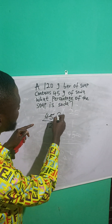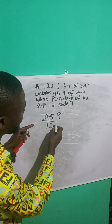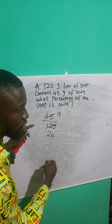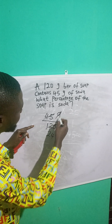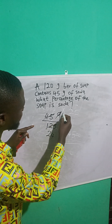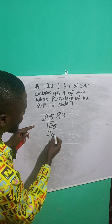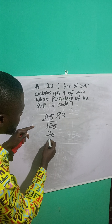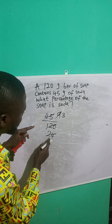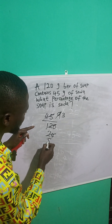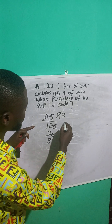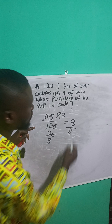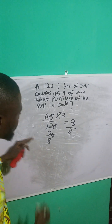5 divided into 45 is 9, and 5 divided into 120 is 24. Then 3 can divide: 3 divided into 9 is 3, and 3 divided into 24 is 8. So the fraction of soda is 3 over 8.